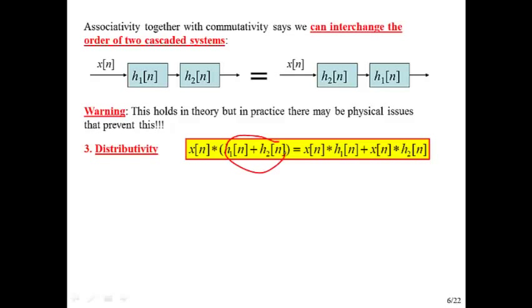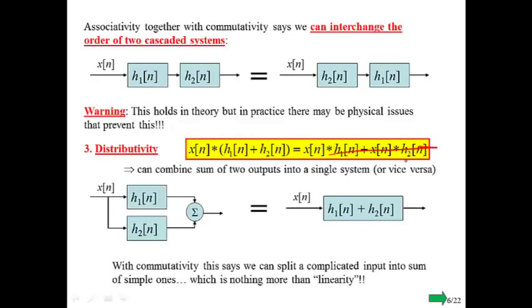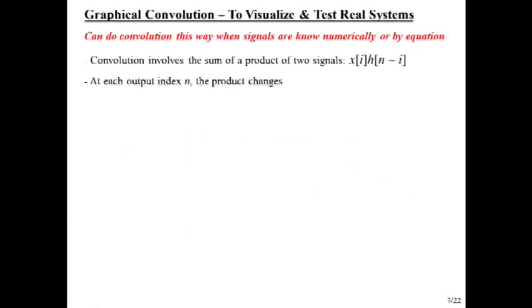Distributivity says that if I add two things together first and then convolve them with x, that it's the same as convolving h1 with x and adding it to h2 convolved with x. From a physical point of view, what that tells us is that I could have two systems kind of acting in parallel. Together with commutativity, this just says that we can split a complicated input into the sum of simple ones. And that's really nothing more than linearity.